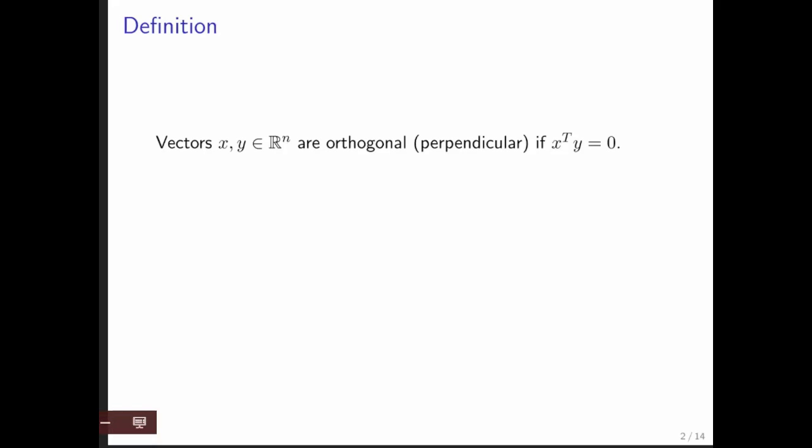The definition is that two vectors x and y are orthogonal or perpendicular if their inner product or dot product is equal to zero. We saw this in unit 1.4.3. I'm going to use the word orthogonal, but you are probably more familiar with the word perpendicular.